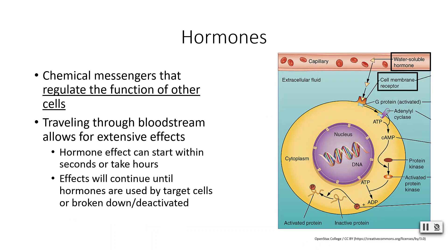Now, hormones — what are we talking about? Hormones are chemical messengers and their job is to regulate the function of other cells. They travel through the bloodstream, which allows them to have very extensive effects all over the body. Although we said that the endocrine system was a slow-acting system overall, some hormones can take effect within seconds while others can take hours before their effects are noticed. The endocrine system is a much longer-lasting response system, so once the effects of a hormone begin, they will continue until the hormone itself is either broken down or deactivated.